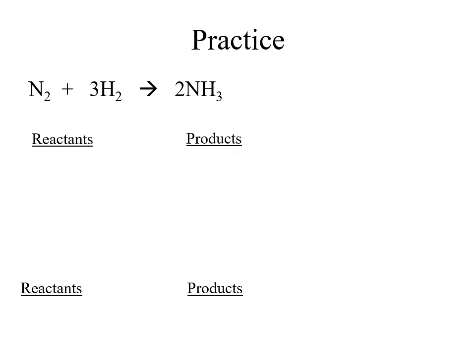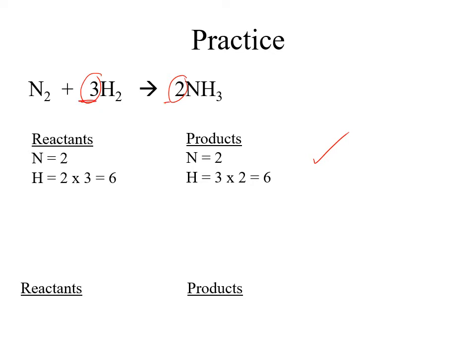Quick practice: based on a previously balanced chemical equation, we can look at the nitrogens and hydrogens on both sides to make sure they're equal. On the reactants, we have two nitrogens and three groups of two hydrogens — six hydrogens. On the product side, with the coefficient of 2, we have two nitrogens and two groups of three hydrogens — six hydrogens. Everything's balanced.